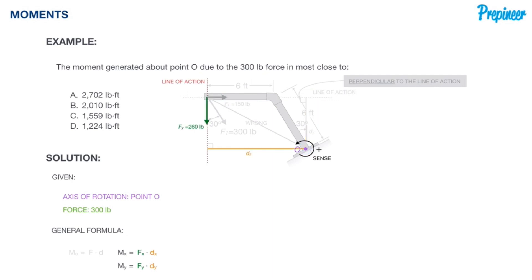Now doing the same for our Fy component of 260 pounds. This is actually going to create a counterclockwise rotation about 0.0. So this is going to be considered a positive moment.